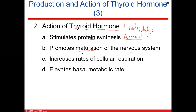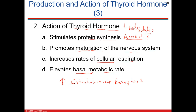Thyroid hormone also upregulates catecholamine receptors — increasing adrenergic receptors for epinephrine — making it very sympathetic. People with hyperthyroidism tend to have faster metabolisms, be thinner, feel hot all the time, and have a type-A personality. Hypothyroidism is the opposite — less fight-or-flight stimulation.